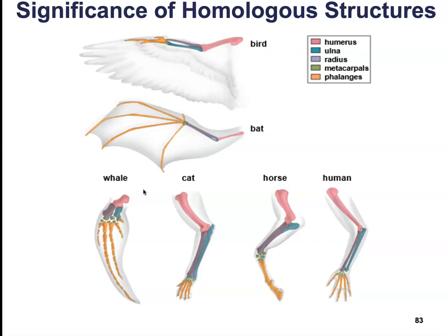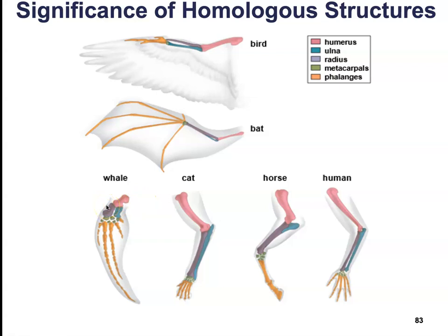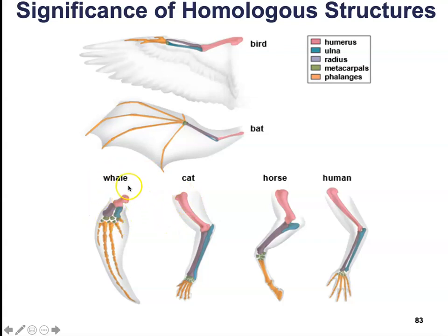Here's an example of homologous structures. Between the bird, bat, whale, cat, horse, and human, we have similar groupings of bones: the humerus, ulna, radius, metacarpals, and phalanges. However, there are huge differences between a human humerus, a horse humerus, and a whale humerus. They differ greatly in structure and even in function — birds use theirs to flap their wings, we use ours for general mobility, and whales use theirs for movement of their large fin but with far less flexibility or range of motion.